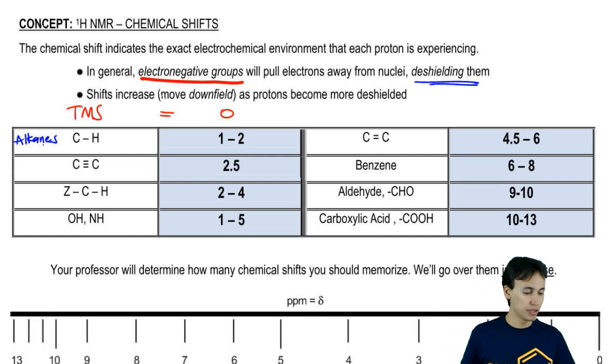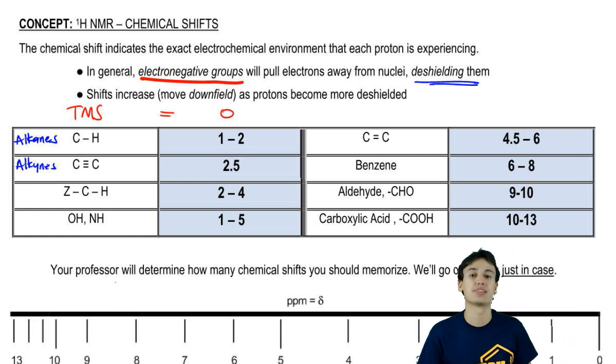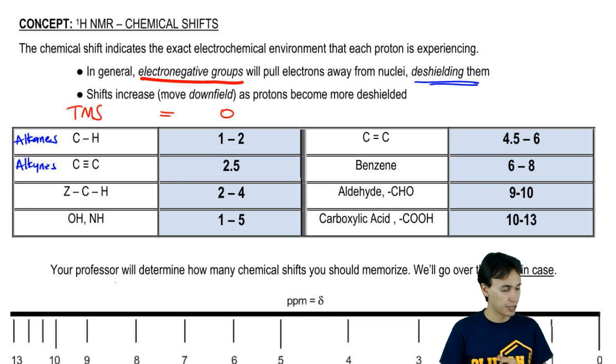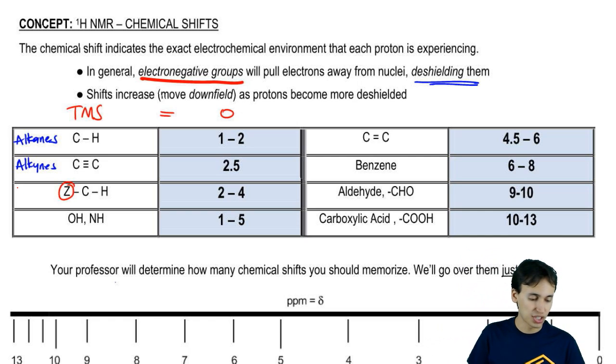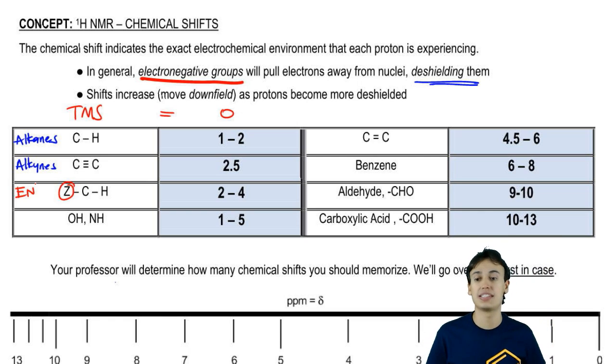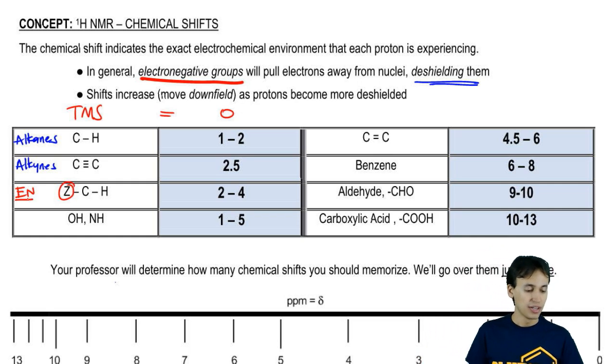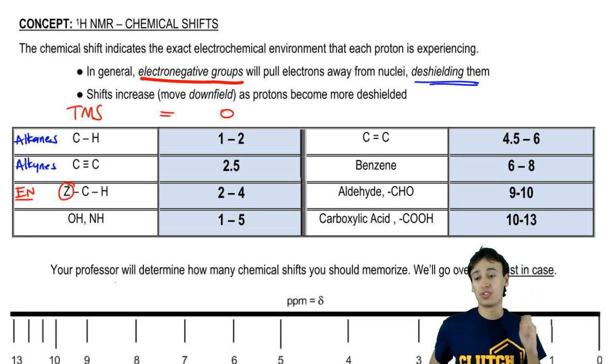Then we have triple bonds - alkynes are going to come next at about 2.5, still relatively shielded. Then we have this very broad group called Z-C-H. What does Z stand for? Z is just going to be something electronegative that's next to it. Z could stand for an atom or a group that is electronegative. This has a range anywhere from 2 to 4 because it really depends on what that Z is. If it's something super electronegative like fluorine, then it's going to be closer to 4. If it's something less electronegative, then a little bit less.